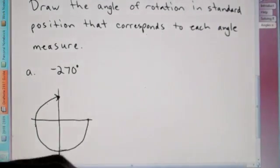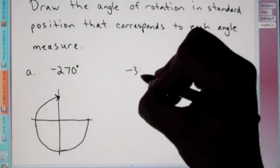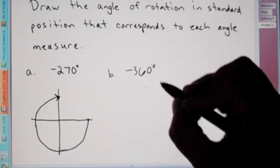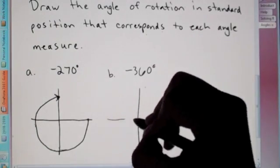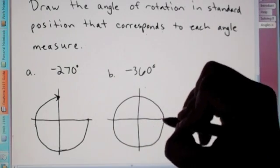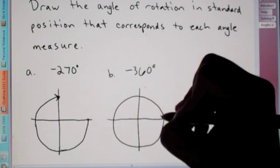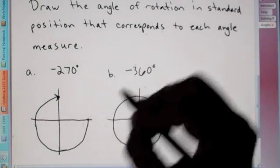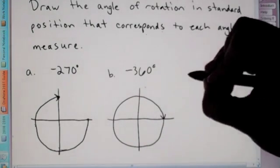So, if it's negative, you go clockwise. How about negative 360 degrees? Negative 360 degrees. Again, that shouldn't be too difficult. That's just a full circle. And we went, we put the arrow to show which way we went. So, we went clockwise because it's a negative.